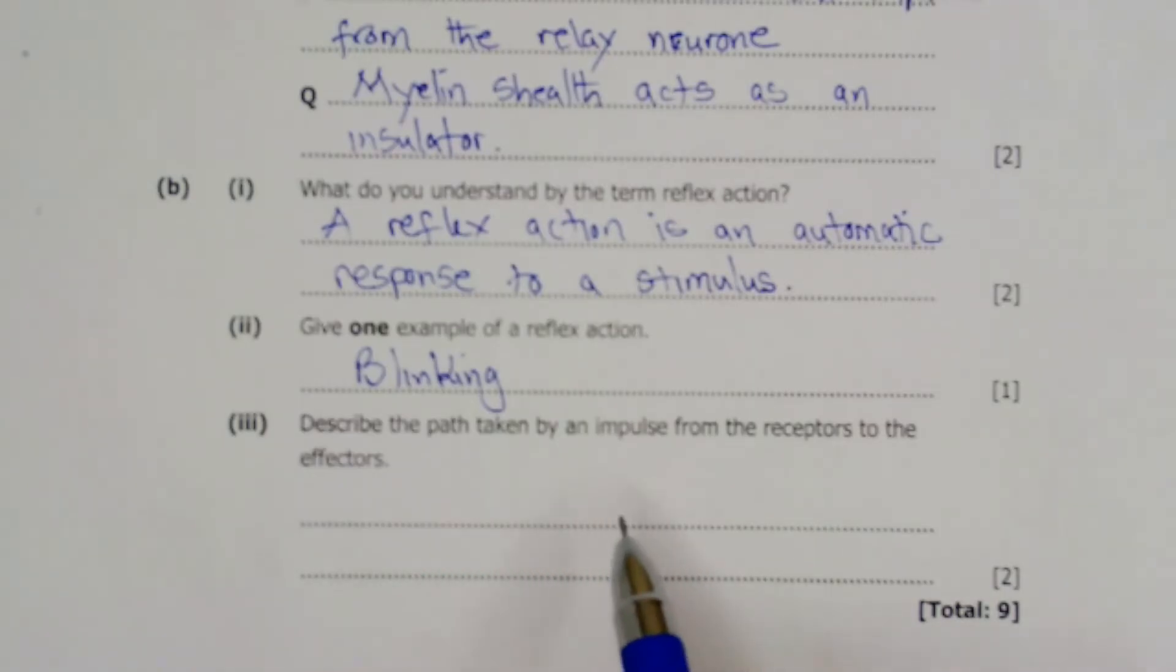Then the electric impulse will be moved to the sensory neuron. Then the sensory neuron will transmit the impulse to the relay neuron across a synapse.